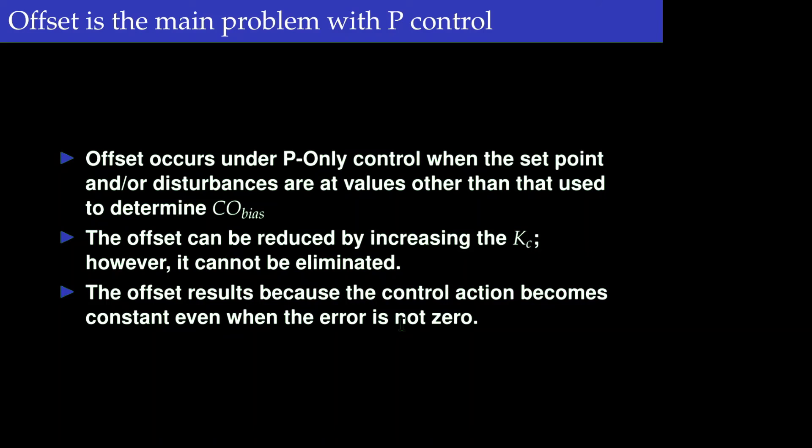Proportional control is simple — there is only one parameter k_c. However, there is always an offset, which we do not want. This leads to the concept that we need a function that will not become constant until the error term becomes zero. The integral is such a function — it will not become constant until the error becomes zero, and that gives us the concept of what is called integral control.